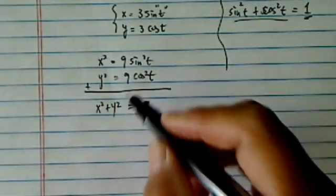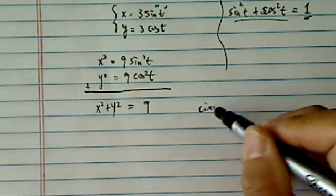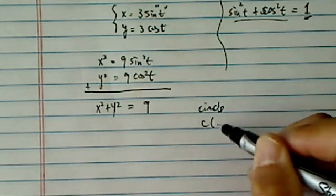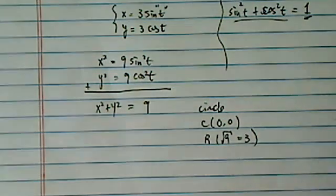And this you can recognize pretty easily. This is a circle. Let's see here. Circle center is at 0, 0. And the radius is equal to 9 square root, which is 3.